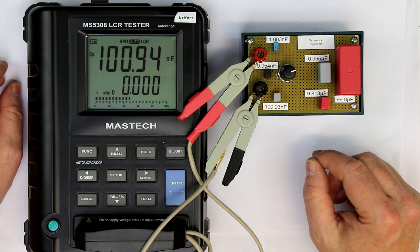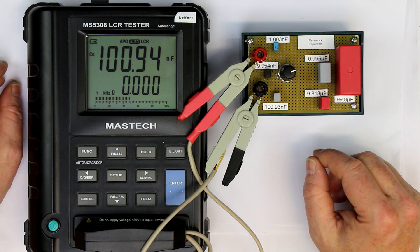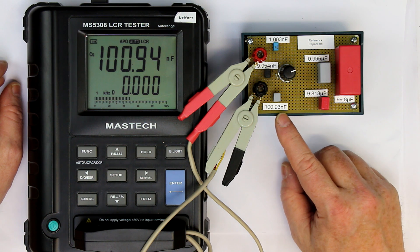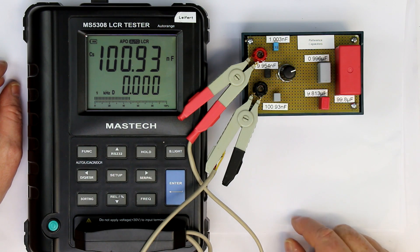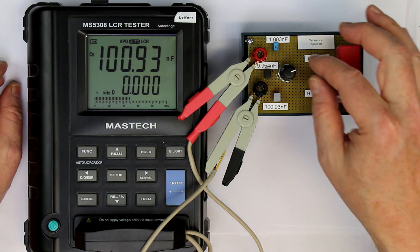So next is the 100 nanofarad, and you can see the deviation is just in the range of 1%. But the repeatability is very good. Exactly the same results up to four decimal places.